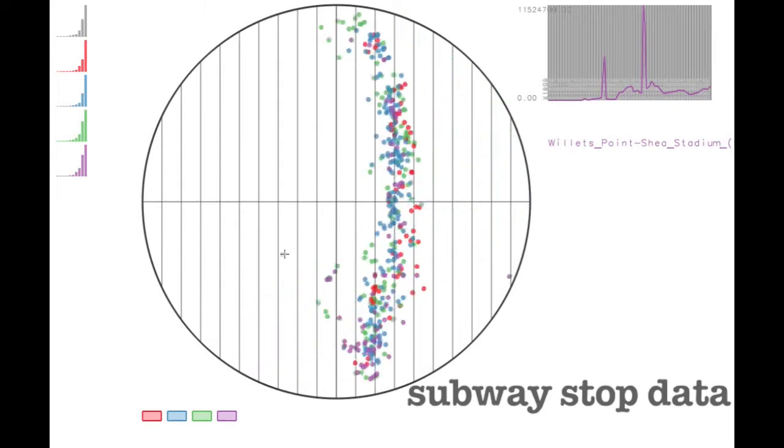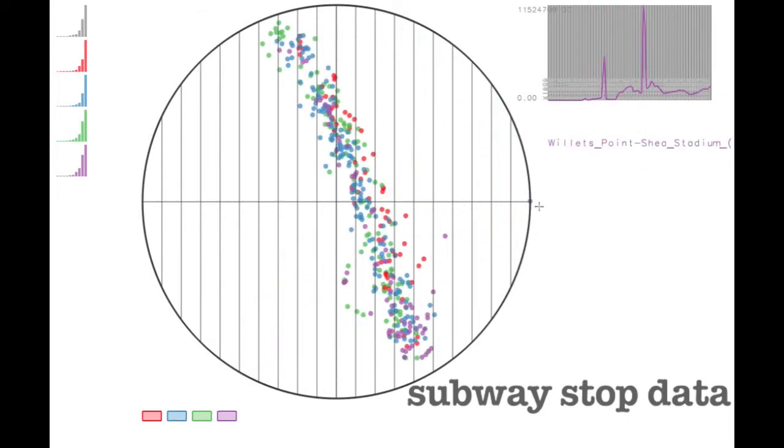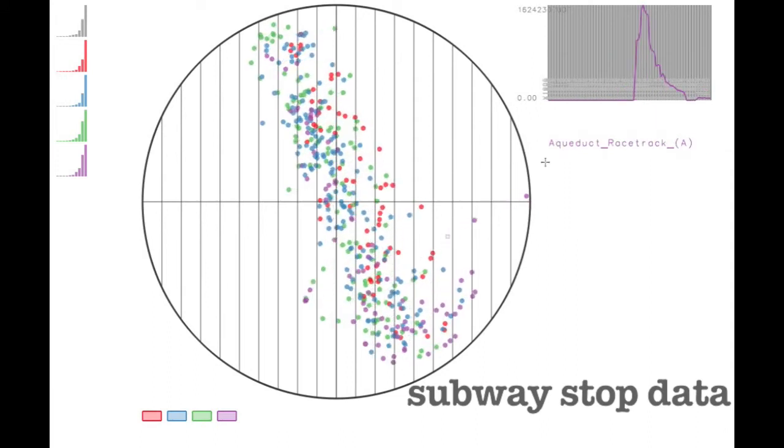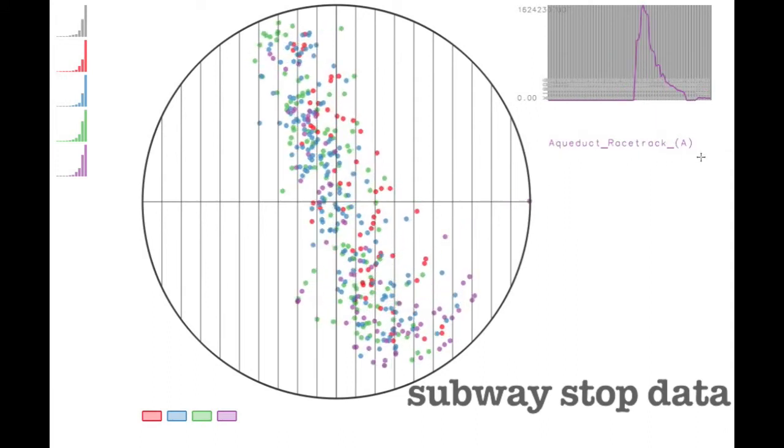By analyzing these stops in the linked parallel coordinates view, it is possible to identify the key years that explain why these outliers exist. In fact, one of these stops is the least used subway stop in the entire subway system.